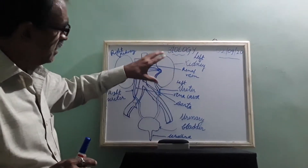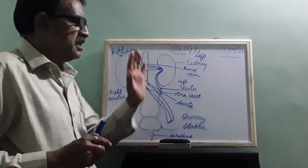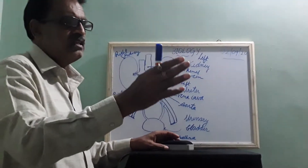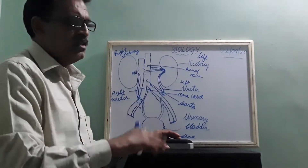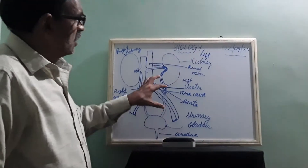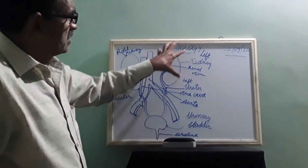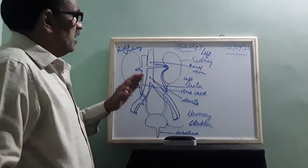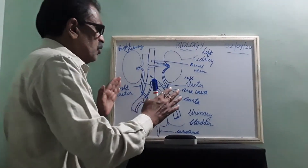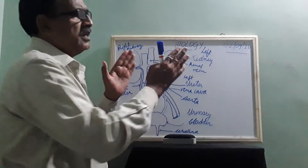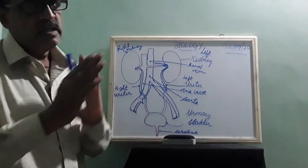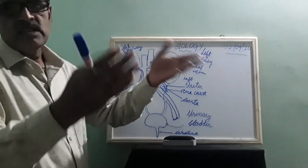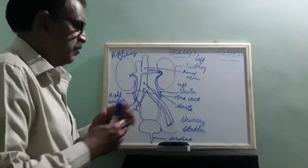The main organs for removal of nitrogenous waste: solid waste is generally released in the form of faeces through the anus. Liquid waste present in our body — our blood also contains waste — and this liquid waste is removed by the help of kidneys. Some part of liquid waste is also removed through the skin as part of the excretory system.